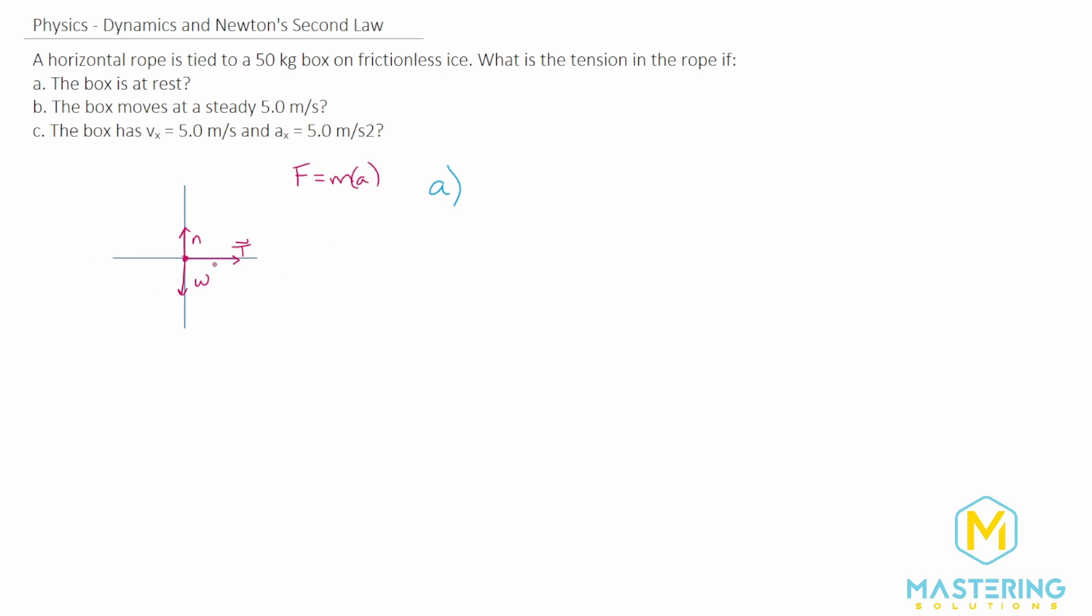So since it's sliding along frictionless ice, it's not going to be accelerating in the y component at all, so we won't worry about that. We're really just looking at the x component here. But if the box is at rest, the acceleration will be zero because it's not moving at all. So the forces, or the tension, will be equal to zero newtons.